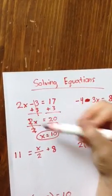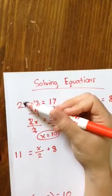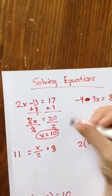I can always check my answer by putting it back in. 2 times 10 is 20. 20 minus 3 is 17. Good. It works.